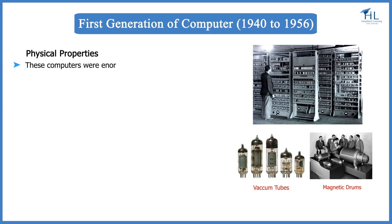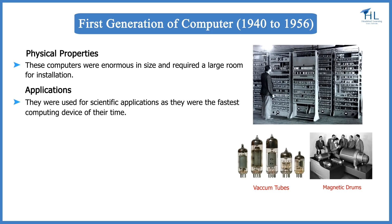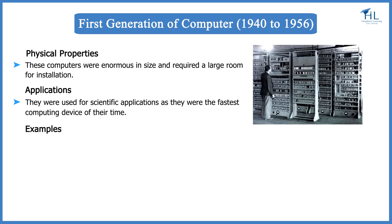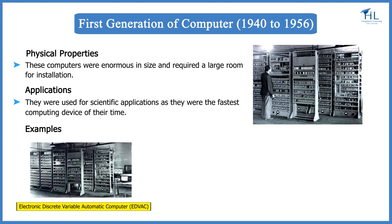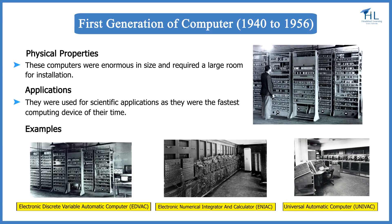These computers were enormous in size and required a large room for installation. They were used for scientific applications, as they were the fastest computing device of their time. Examples of first generation computers are the Electronic Discrete Variable Automatic Computer (EDVAC), Electronic Numerical Integrator and Calculator (ENIAC), and Universal Automatic Computer (UNIVAC).